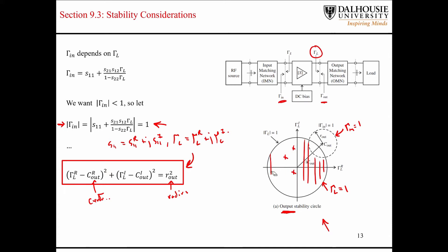For example, assume this is the stable region and that the Γ_in equals one circle represents the unstable region. Any reflection coefficients in the stable region will result in a stable amplifier. These impedances represent the impedance seen looking into the output matching network. We might also have the case where the inside of this circle is the stable region. We don't want a load reflection coefficient greater than one, which limits us to the stable region of acceptable output impedances.